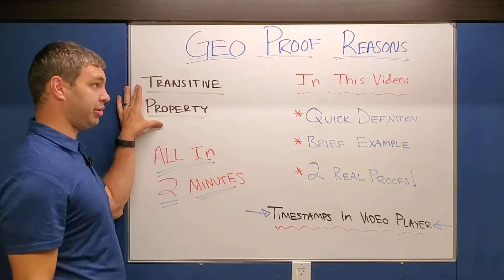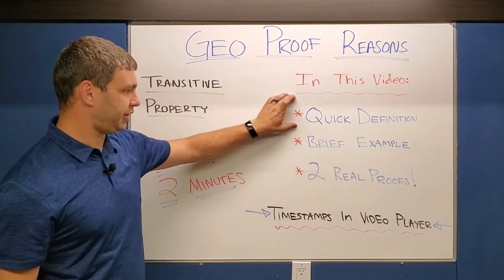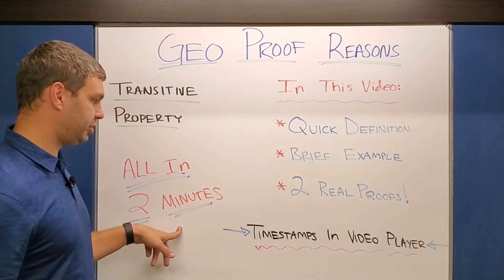Today we're talking all about transitive property in our geometry proof reasons playlist. We're going to give you a quick definition of it, a brief example, as well as two real proofs all in less than two minutes.